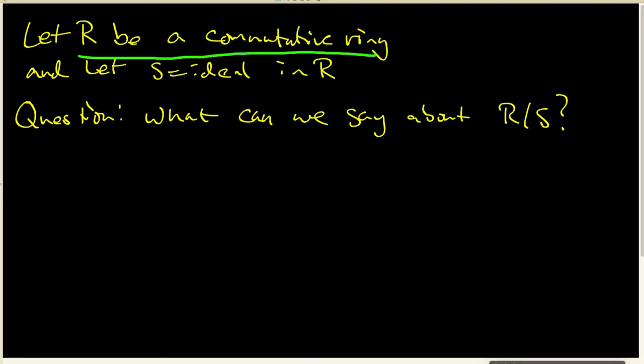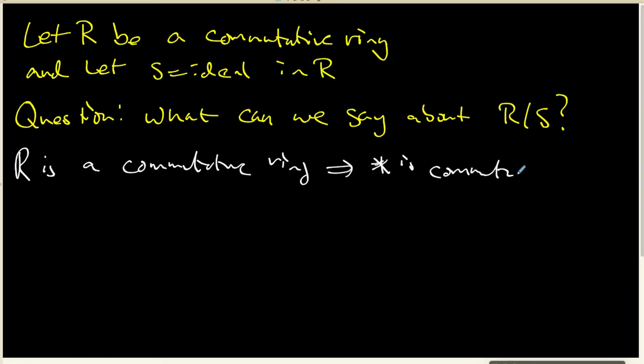Well, I kind of want to think about what does that mean. R is a commutative ring, means that times is commutative inside the ring R. In other words, for every pair of elements A and B inside R, we know that AB and BA are one and exactly the same thing.